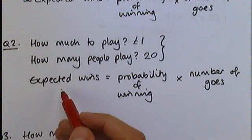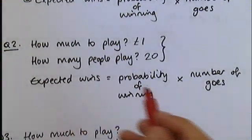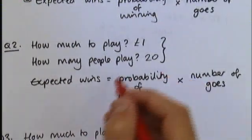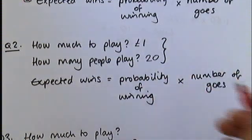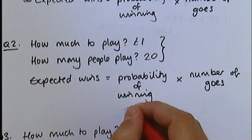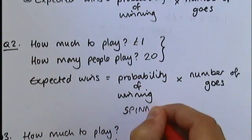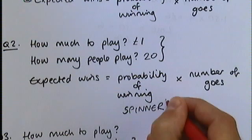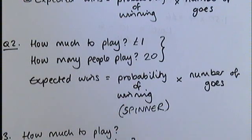Again, can you find out the expected number of wins? Can you multiply the probability of winning by the number of goes that are being had here? The probability of winning, you'll have to look at the spinner. You'll have to work out the probability of winning. And you need to multiply that by the number of goes at this game. That will give you the number of wins. That will be a second mark, which will be good going on a question like this.